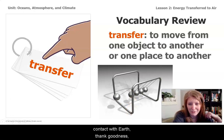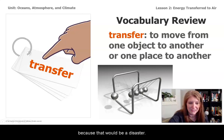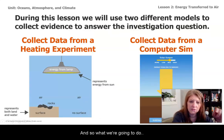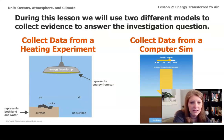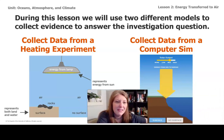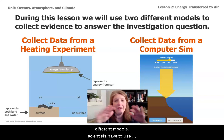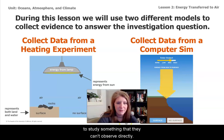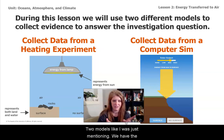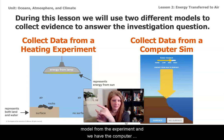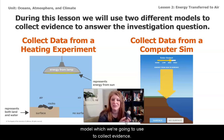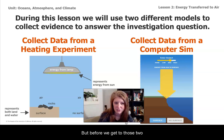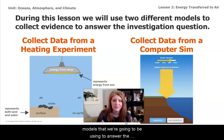Obviously the sun is not in contact with earth — thank goodness, because that would be a disaster. But how is the air on our planet getting heated at all? During this lesson, we're going to use two different models. Scientists have to use models sometimes to study something that they can't observe directly. We have the model from an experiment and a computer model, which we're going to use to collect evidence. I'll make a video of each one that you can watch.